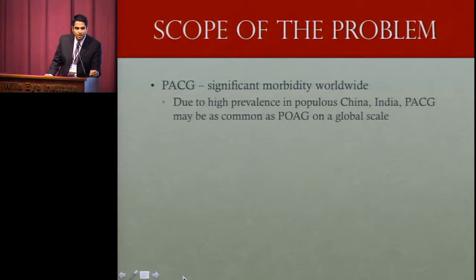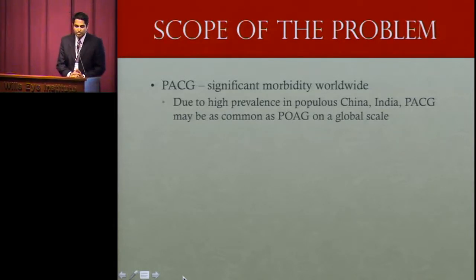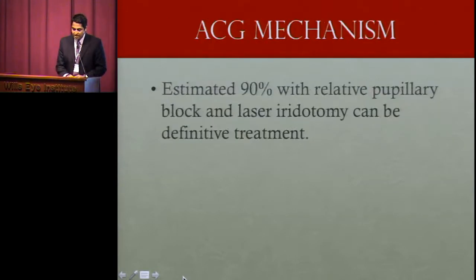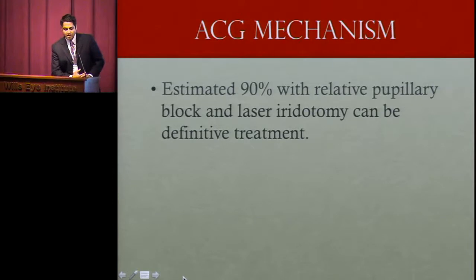Primary angle closure glaucoma is a significant morbidity worldwide. Due to the expanding scope of populations, especially in high-risk areas such as China and India, primary angle closure glaucoma might even exceed open angle glaucoma on a global scale. It's estimated that 90% of this population is due to relative pupillary block, for which a laser iridotomy can be a definitive treatment.